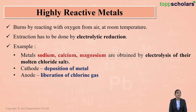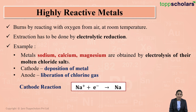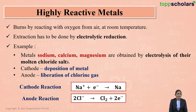Chlorine gas is liberated at the anode. For example, in the electrolysis of molten sodium chloride, sodium metal gets deposited at the cathode — there is gain of electrons, so reduction takes place at the cathode. At the anode, chloride ions lose electrons, which is oxidation, so chlorine gas is liberated at the anode.